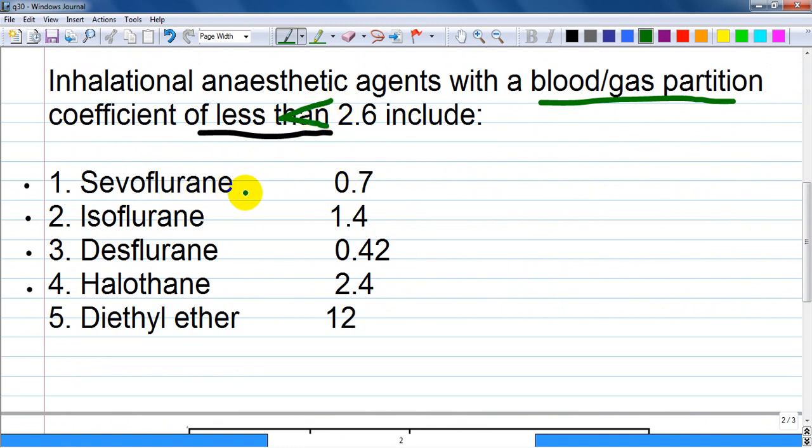I made it easy for you and put in a row the corresponding blood gas partition coefficient for every inhalational anesthetic. As you see, sevoflurane, isoflurane, desflurane, halothane are the correct ones, and diethyl ether has a blood gas partition coefficient of 12, which does not fit this condition.